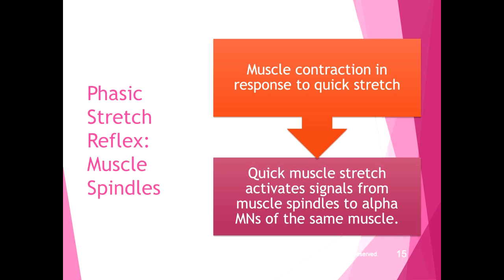When a muscle contracts in response to a quick stretch, that's called the phasic stretch reflex, mediated by muscle spindles. The muscle spindle is a sensory receptor that responds to the velocity of stretch. A quick muscle stretch activates signals from muscle spindles to the alpha motor neurons of the same muscle, causing it to contract. Clinically, we can use this to our advantage — apply a quick stretch to elicit a good muscle contraction.